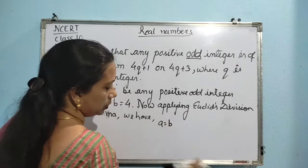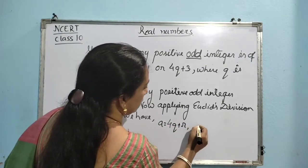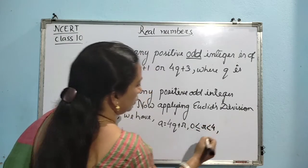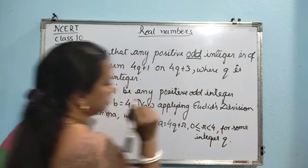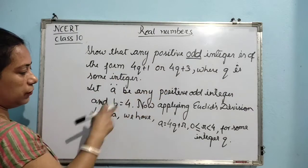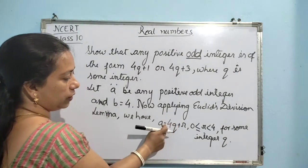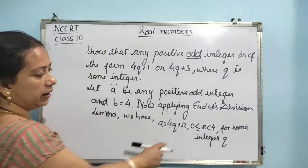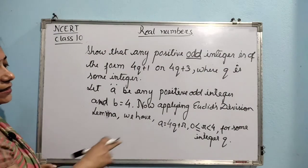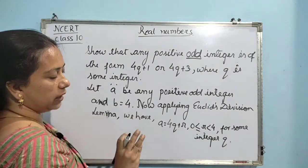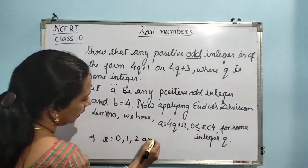we have A is equal to 4Q plus R, where R is less than 4, for some integer Q. So R lies in the range 0 less than or equal to R less than 4. How many values of R can we have? It implies that we will be having 4 values of R: 0, 1, 2, and 3.